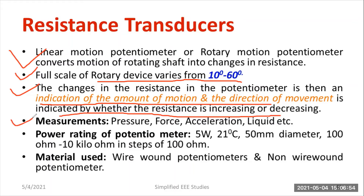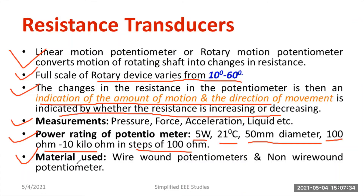The quantities that can be measured include pressure, force, acceleration, linear velocity, angular velocity, and even liquid level. Regarding power ratings, the potentiometer is available at 5 watts, with temperature varying up to 21 degrees Celsius, diameter around 50 millimeters, and resistance values ranging from 10 ohm to 10 kilo-ohm in steps of 100 ohm. Normally, we employ a wire wound potentiometer, but you can also use a non-wire wound potentiometer.